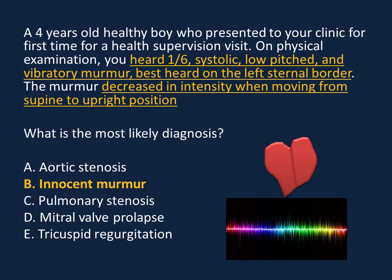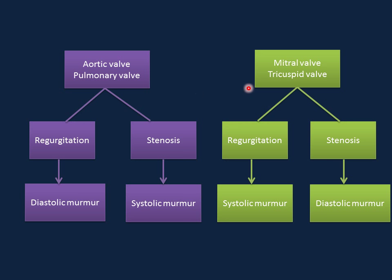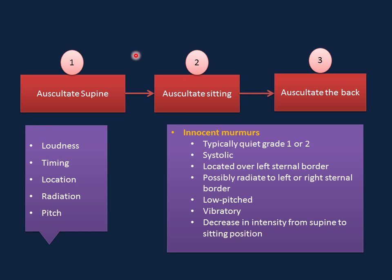A simple classification of murmurs by valvular lesion: mitral or tricuspid stenosis produces a diastolic murmur; regurgitation produces a systolic murmur. For the aortic or pulmonary valve, the opposite applies — stenosis gives a systolic murmur and regurgitation gives a diastolic murmur. When listening to the heart, first listen with the child supine — over the precordium, axilla, neck, abdomen, and fontanelle if still open. Then move from supine to sitting and listen to the same locations, then listen to the back.